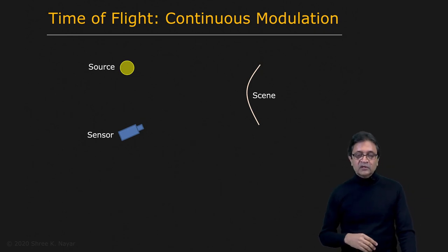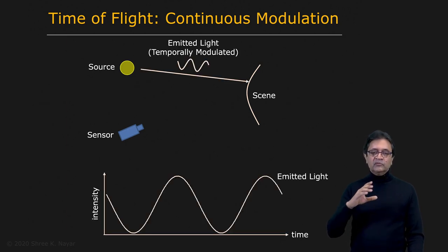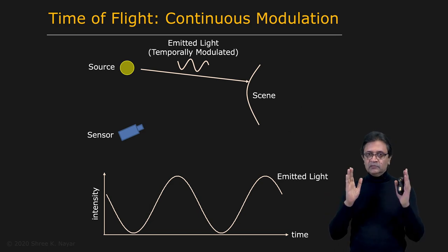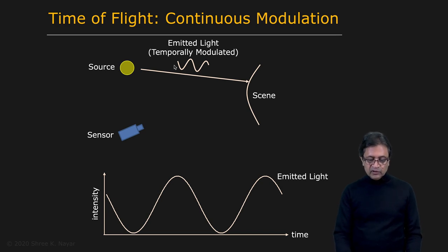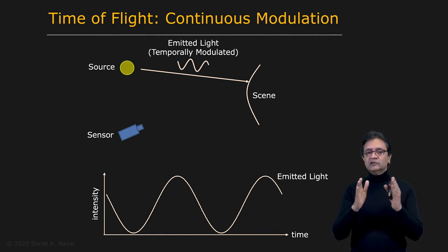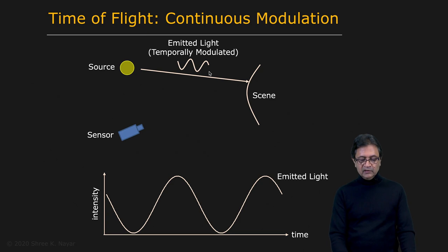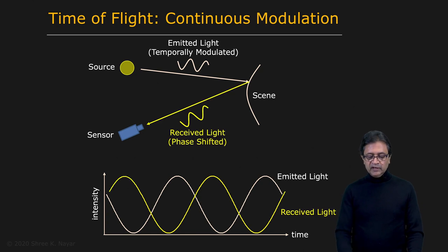Here is another way to do this, which is called continuous modulation. In this case, the source actually sends out a temporally modulated function. It's light, but you're modulating the amplitude of light. I don't want you to confuse this wave with the frequency or wavelength of light itself—it's just the intensity of light, the brightness, being modulated. Temporally modulated light that's being sent out strikes the surface. The modulation is preserved, gets reflected, and then it's received by the sensor.